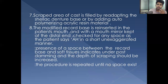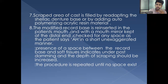The scraped area of the cast is filled by re-adapting the shell-like denture base or by adding auto-polymerizing acrylic resin material. The modified record base is reinserted in the patient's mouth and checked with a mouth mirror at the distal end as the patient says 'ah' in a short, unexaggerated manner. The presence of space between the record base and soft tissue indicates under post damming, and the depth of scraping should be increased. The procedure is repeated until no space exists.